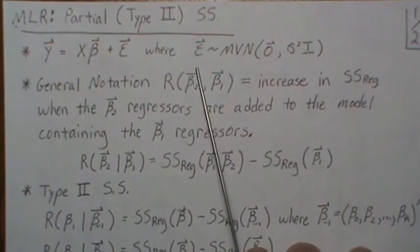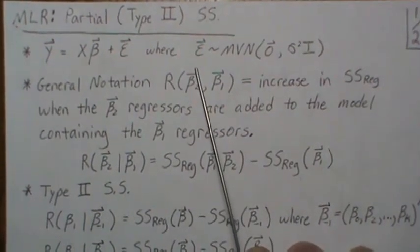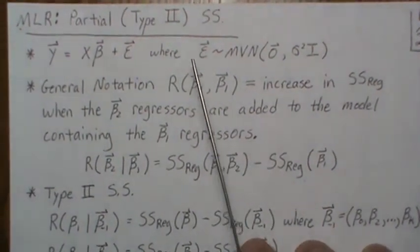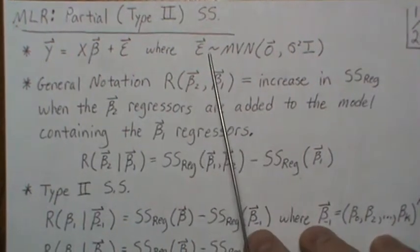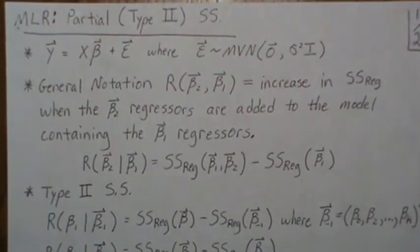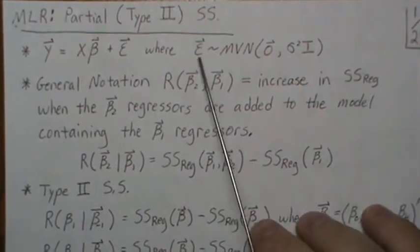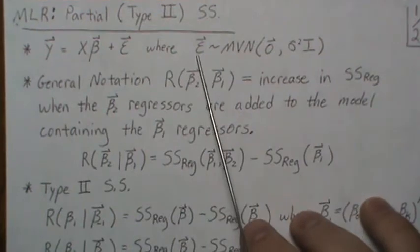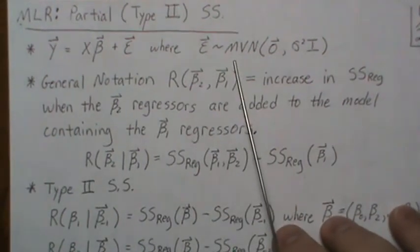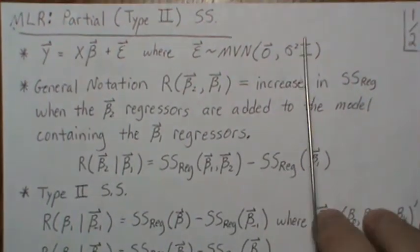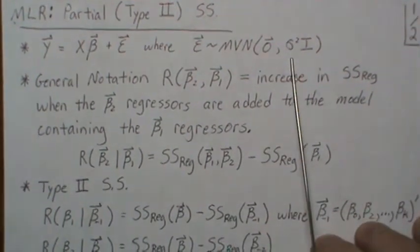Since we're going to try to develop some distributional properties of the type 2 sum of squares, we need to make some distributional assumptions, and we're going to do that on the error term — multivariate normal with mean 0 and variance-covariance matrix.